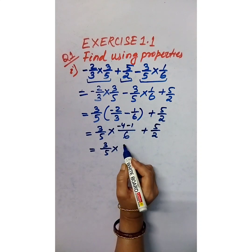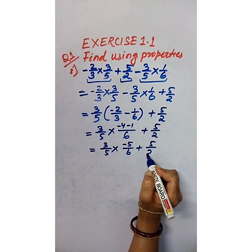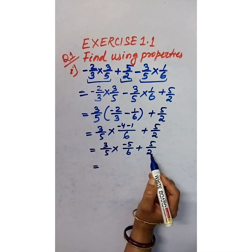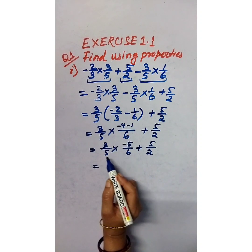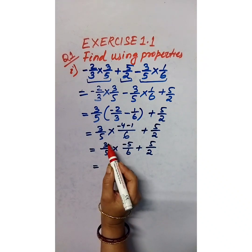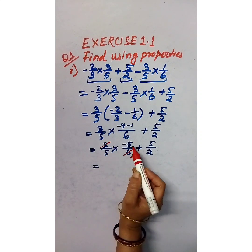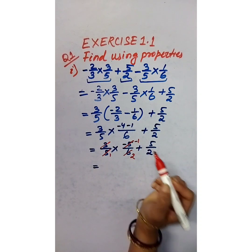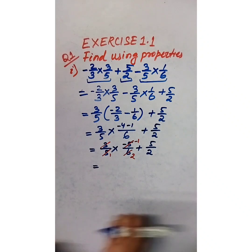So we have 3/5 into negative 5/6, plus 5/2. Since we have multiplication and addition, during simplification we must simplify the product first. We can reduce 3 and 6 — 3 twos are 6 — and reduce 5 and 5, giving negative 1.